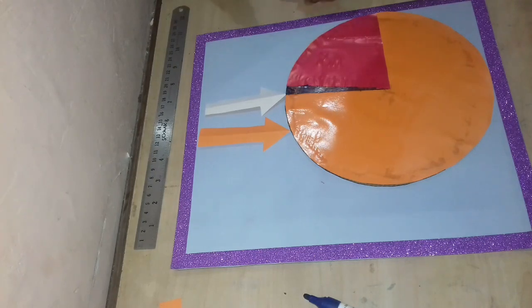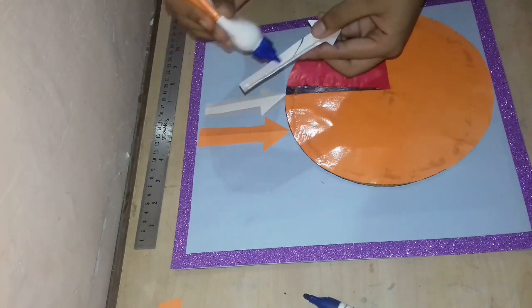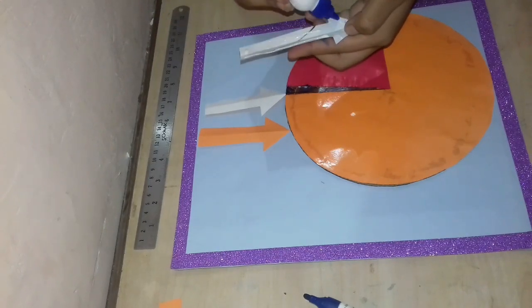Now we will paste the arrows on the base which will represent each gas on the pie chart.